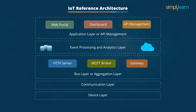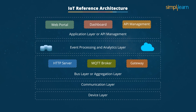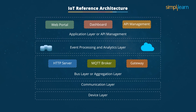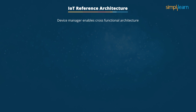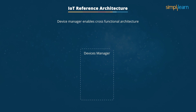This layer also helps communicate with systems outside the network using machine-to-machine communication. The comprehensive IoT reference architecture includes various components, rule engines, interfaces, and security systems embedded.